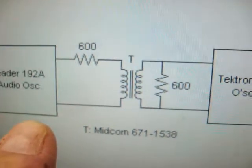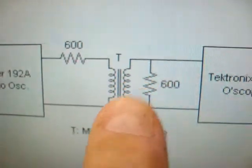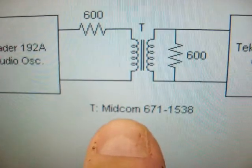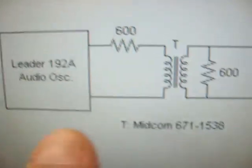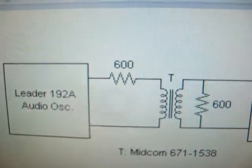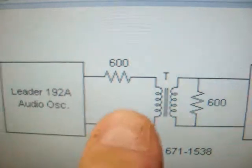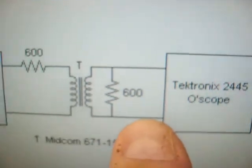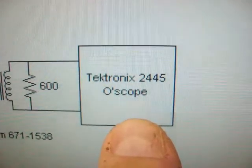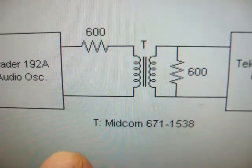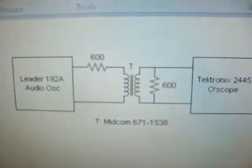And here's the test setup I used. This is the schematic, and here's the transformer again—that's the Midcom 671-1538. I used a 600 ohm resistor to set the impedance and a 600 ohm termination out here at the Tektronix 2445 oscilloscope. So now let's have a look and see what it does in real time.